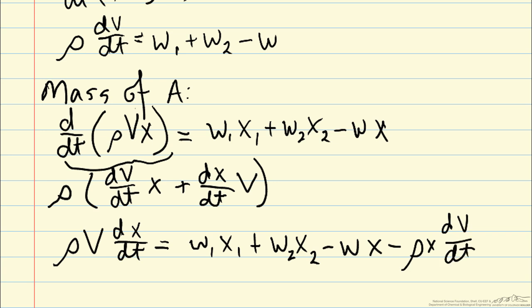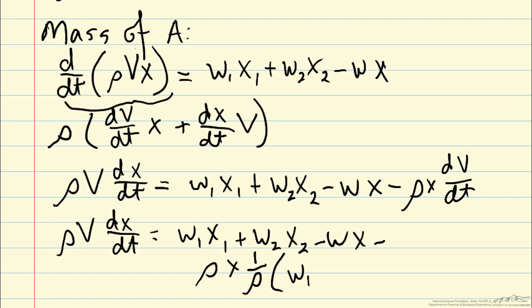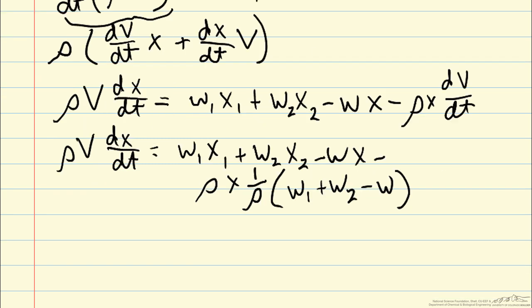But we already know what is rho dV dt from our total mass equation up there at the top. So we can go ahead and plug that in and get rho V dX dt equals W1 X1 plus W2 X2 minus WX minus rho X times dV dt, which is 1 over rho times W1 plus W2 minus W. This will allow us to get an equation for dX dt.